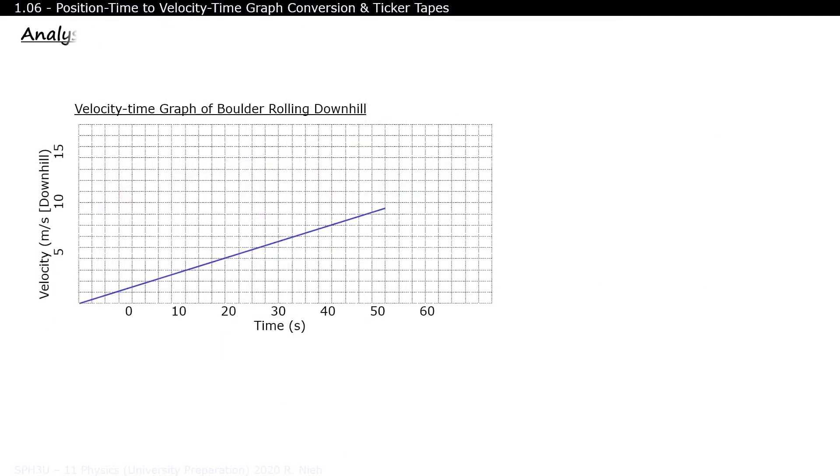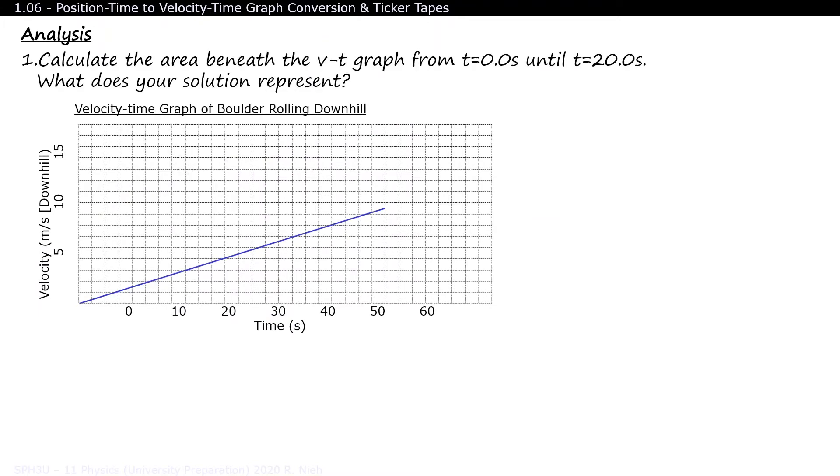Let's continue with our analysis on course pack page 12. Calculate the first 20 seconds of surface area underneath the VT graph. This area is in the shape of a triangle, so we'll use the formula 1 half height times base to determine its surface area.